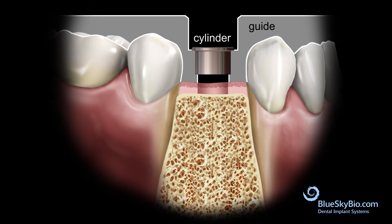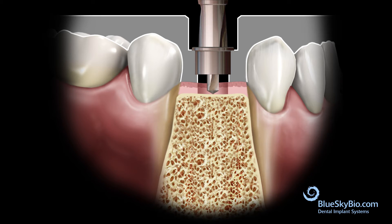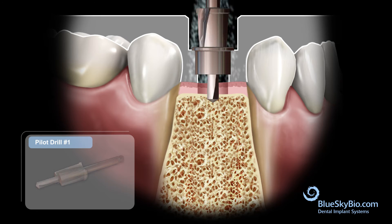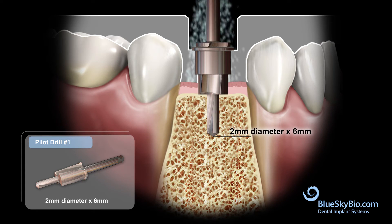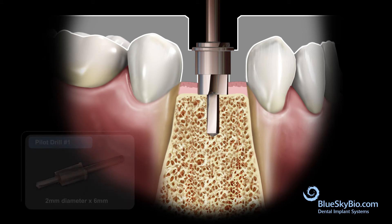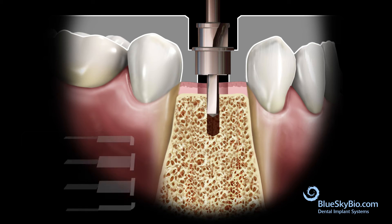Insert the 2 by 6 millimeter drill. Activate the drill within the master tube only after it is inserted in the guide and centered by the master tube. Drill with copious irrigation and advance until the drill is stopped by the master tube. It is recommended to drill at 800 to 1200 RPM with copious irrigation.